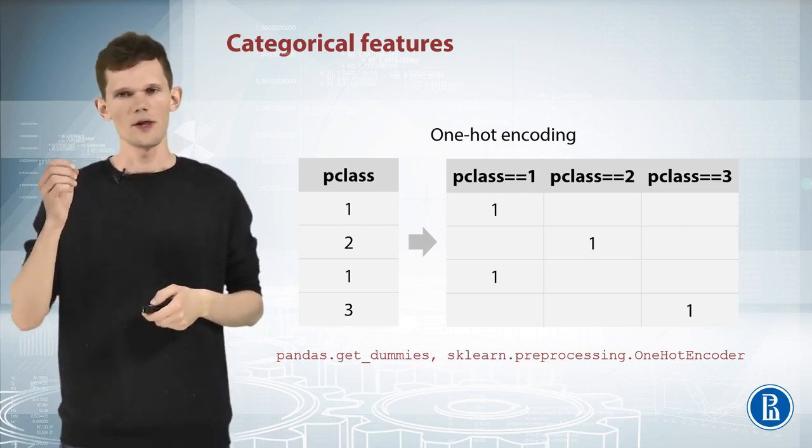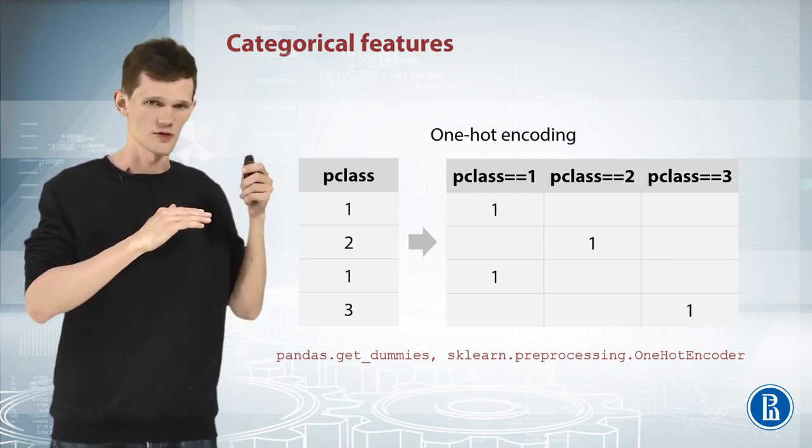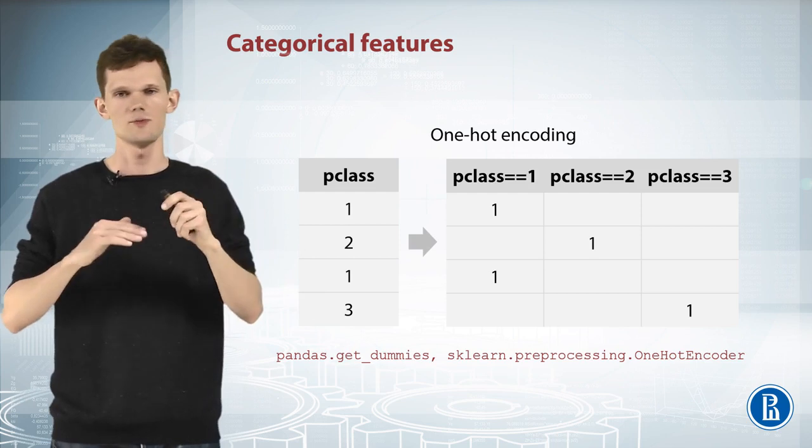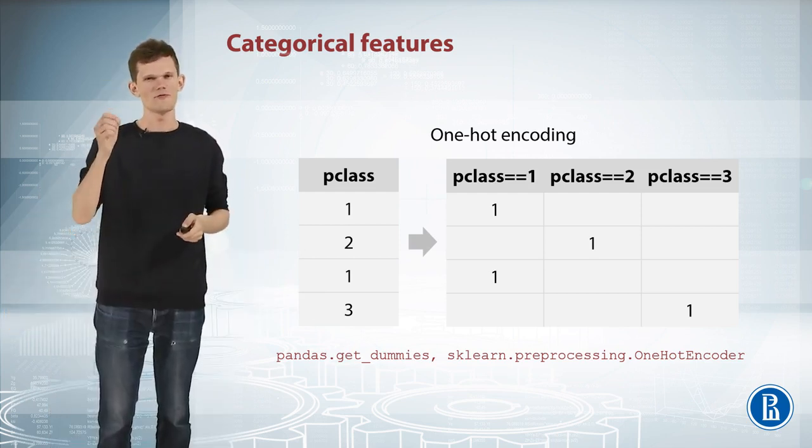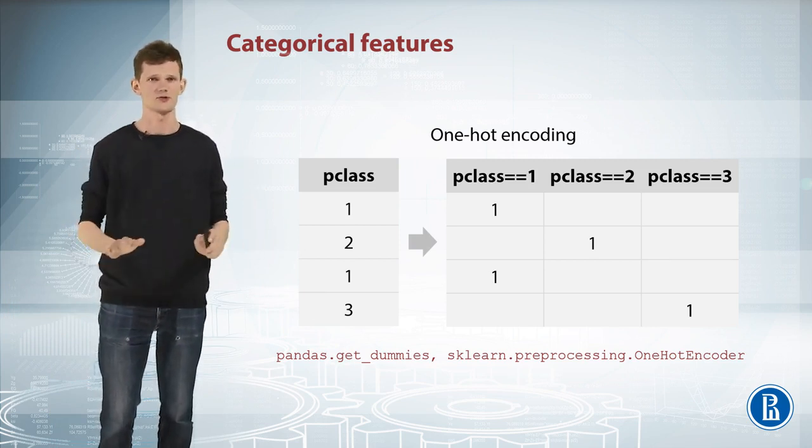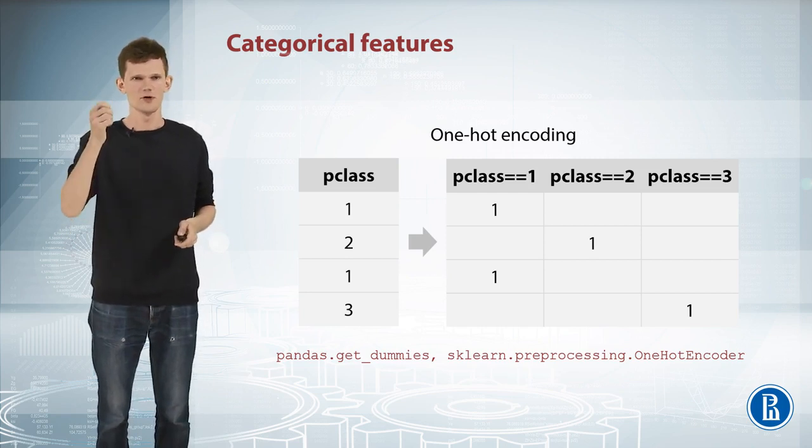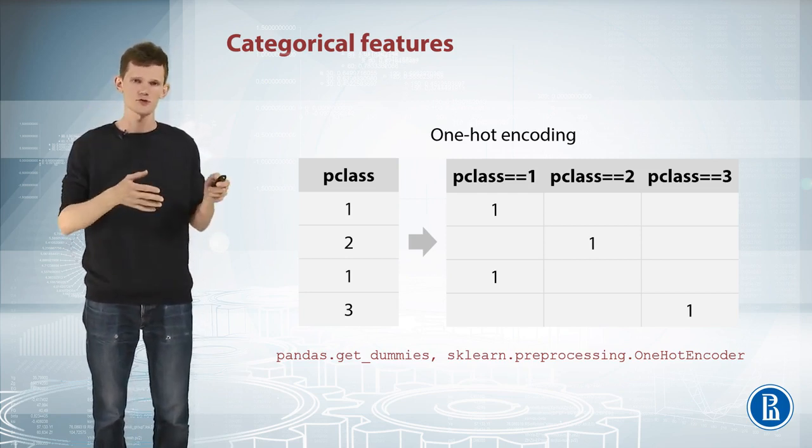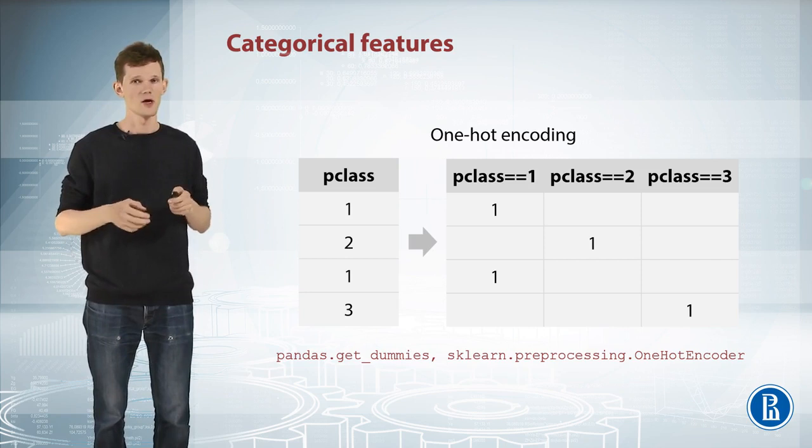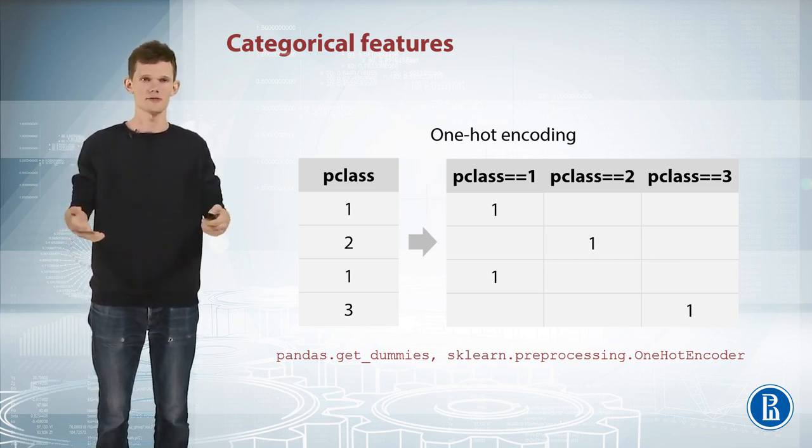Furthermore, one-hot encoded feature is already scaled because minimum of this feature is 0 and maximum is 1. Note that if you have a few important numeric features and hundreds of binary features produced by one hot encoding, it could become difficult for tree methods to use first ones efficiently. More precisely, tree methods will slow down, not always improving their results.